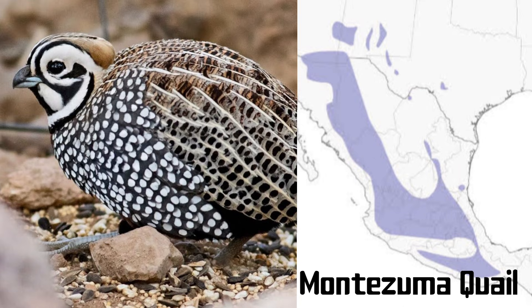Despite the male's extravagant patterning, the Montezuma quail is seen rarely as it is a master of hiding in the mountain grasslands and woodlands of Mexico where it is found. The Montezuma quail doesn't travel around much, moving as little as 150 feet per day. These birds travel in pairs or in small family groups, rarely forming large coveys.